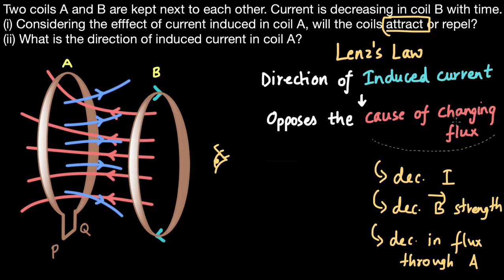There is a problem: the law says it should oppose the cause of changing flux. If the blue magnetic field lines due to coil A point in the opposite direction, there would be an even lesser number of magnetic field lines passing through coil A — the red and blue field lines would create a net field in between, and the flux through coil A would decrease further. But that is not what the law says. The key is that opposition should be to the changing flux, not just flux itself. So the field lines cannot go in that direction — this is wrong.